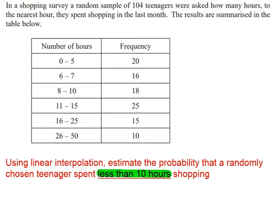And the wrong way to do this would be to think, well that's 10, and less than 10 is all of this, so why not just add up all of these numbers, and then divide by 104, and that will give us the probability.